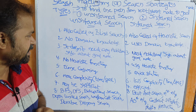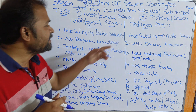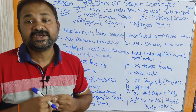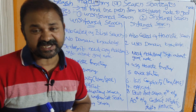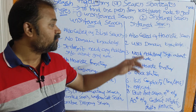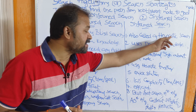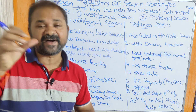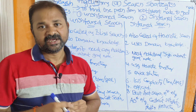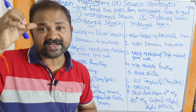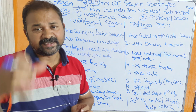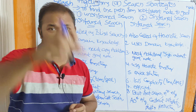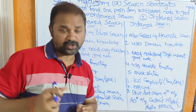The informed search technique is also called a heuristic search technique, because here we use heuristic functions. The heuristic function determines the cost from that node to the goal node.